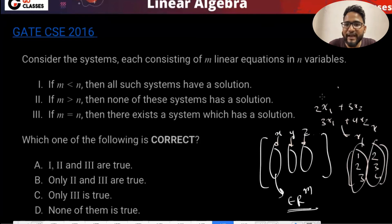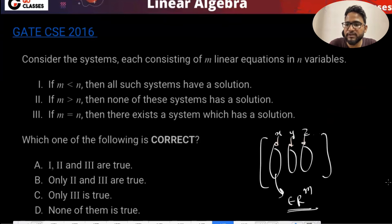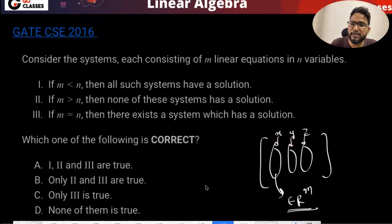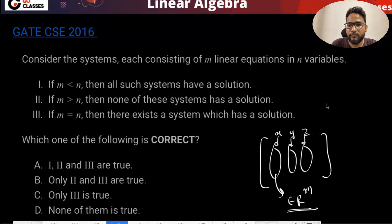Now they are saying n variables, which means n columns, and m equations means every column is in Rn. There are three statements and they're asking something about these three statements. Most of you are getting option C.